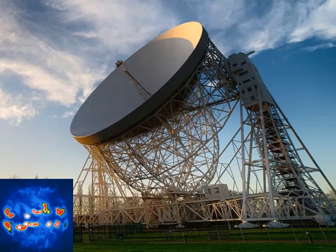This is the dish of the radio telescope at Jodrell Bank. The blue inset is a false colour image of the Sun at radio frequencies.